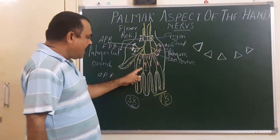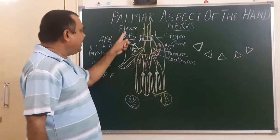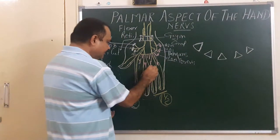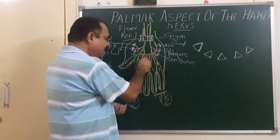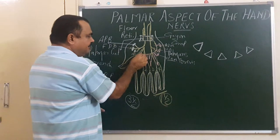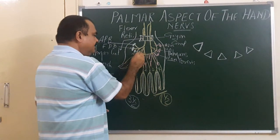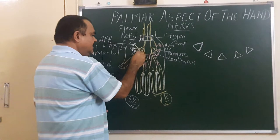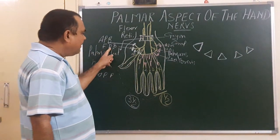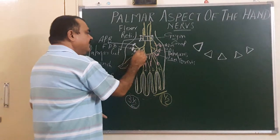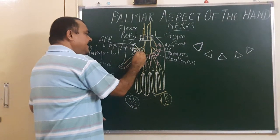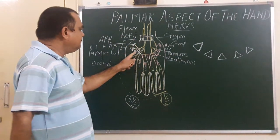As you know, the 1st and 2nd lumbricals are supplied by the median nerve, so the 3rd and 4th lumbricals are supplied by the ulnar nerve. The deep branch also gives a branch to adductor pollicis and to the deep head of the flexor pollicis brevis.